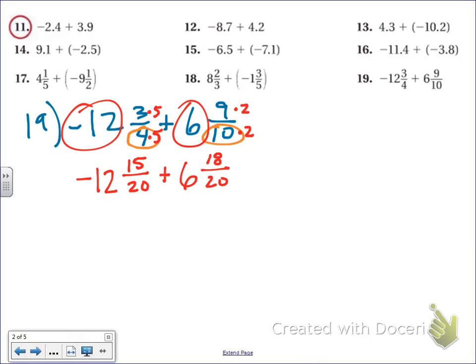All right, now when I do these problems, you just focus on the numbers in front first, so negative 12 plus 6. And those are different signs, so I subtract. 12 minus 6 equals 6, and 12 has the bigger number, so it's negative 6.